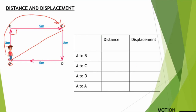For the next case, A to D, the person travels from A all the way to D. The distance would be AB plus BC plus CD, which equals 11 meters. The displacement is found by connecting the initial position A to the final position D, giving a displacement of 5 meters.